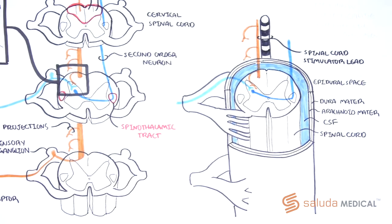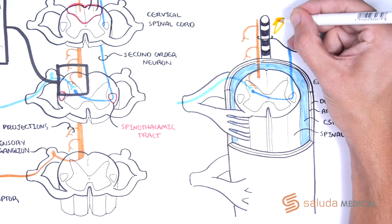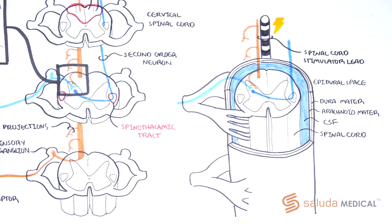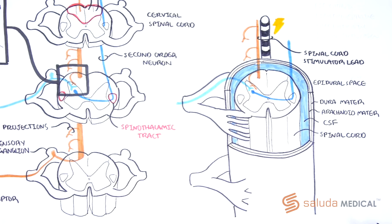Current is passed through the lead at one or more of the contacts to create an electric field. This field, as it increases in strength, will penetrate the dura mater and arachnoid mater and cerebrospinal fluid, and if strong enough, will activate the sensory cells whose axons run within the dorsal columns, the mechanoreceptors.